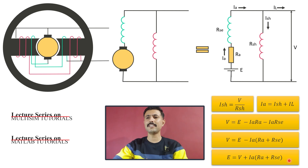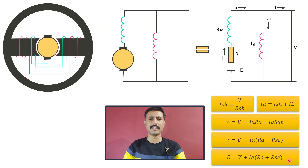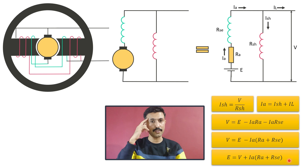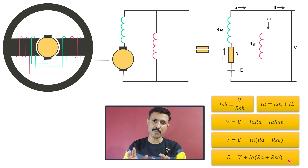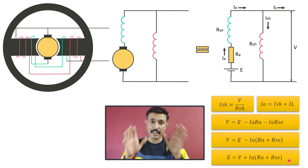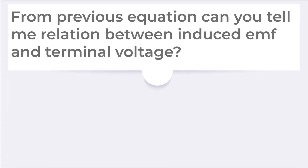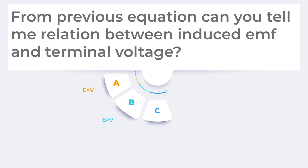Rearranging the equation, the induced EMF is: E = V + IA(RA + RSE). This is the equation for induced EMF in a long shunt DC generator. Now it's time for a brain test. From this equation, can you tell me the relation between induced EMF E and terminal voltage V? Think about it and write your answer in the comment section below.